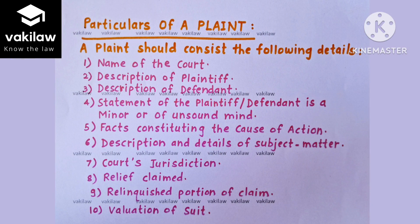The essential contents of a plaint are: name of the court, description of plaintiff, description of defendant, statement of whether plaintiff or defendant is a minor or of unsound mind, facts constituting the cause of action, description and details of subject matter, the court's jurisdiction, the relief claimed, the relinquished portion of claim, and finally the valuation of the suit. One must file a plaint as per this format.